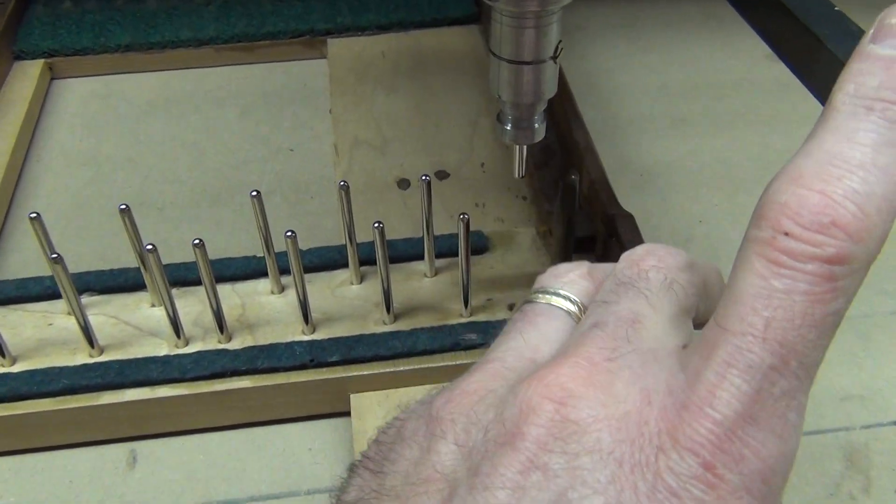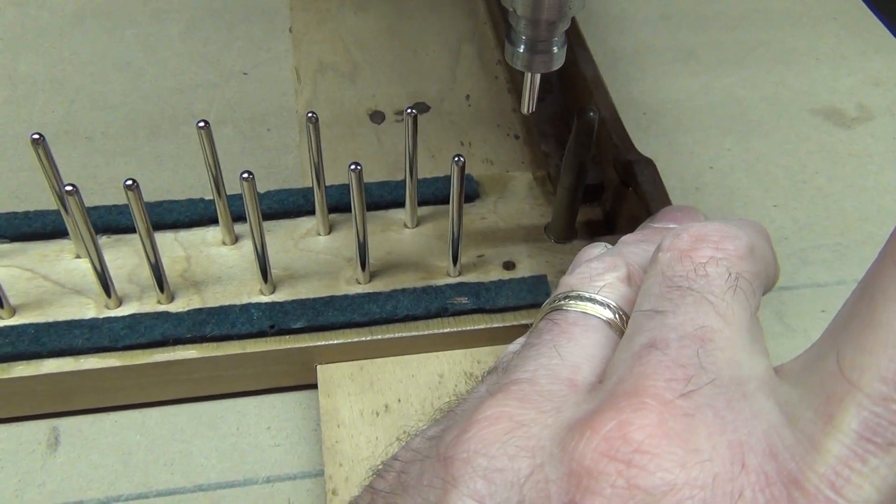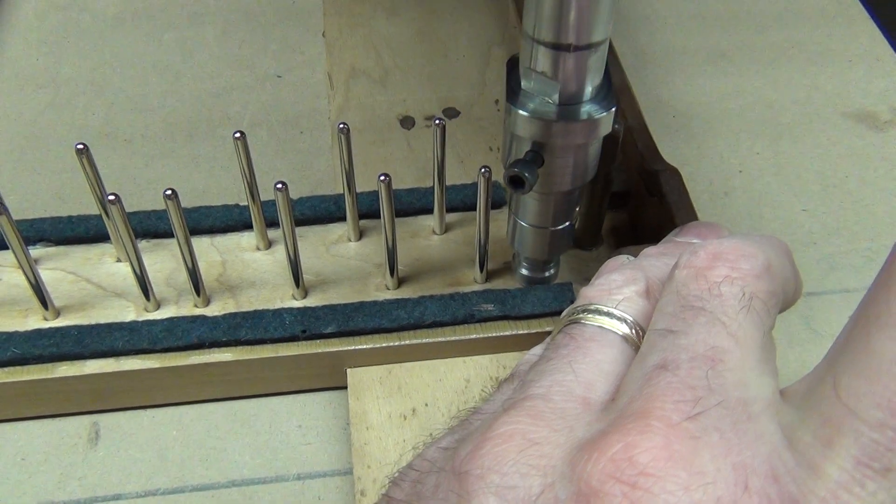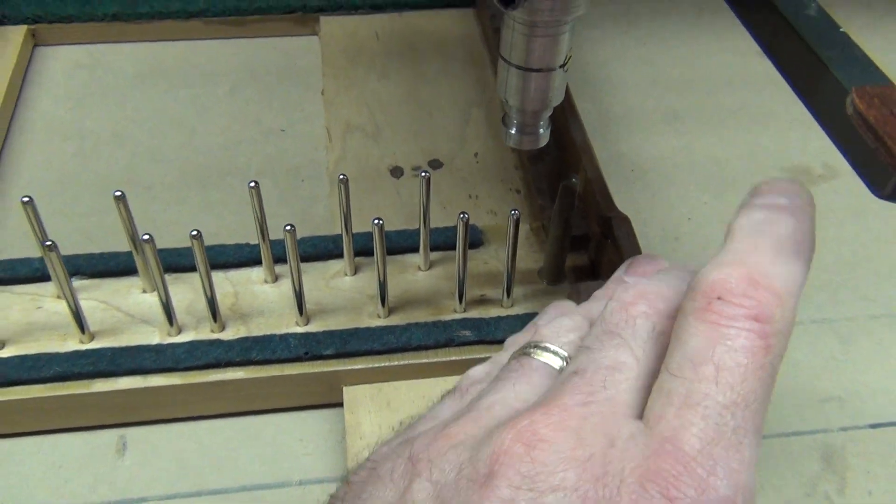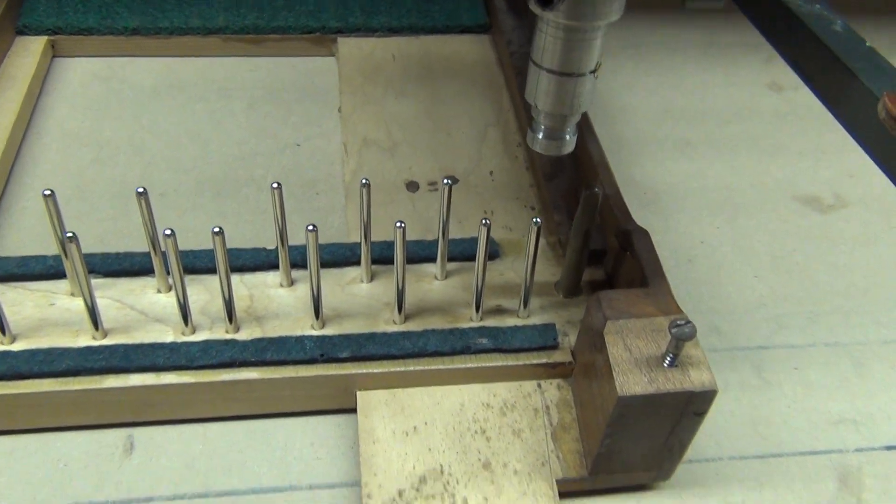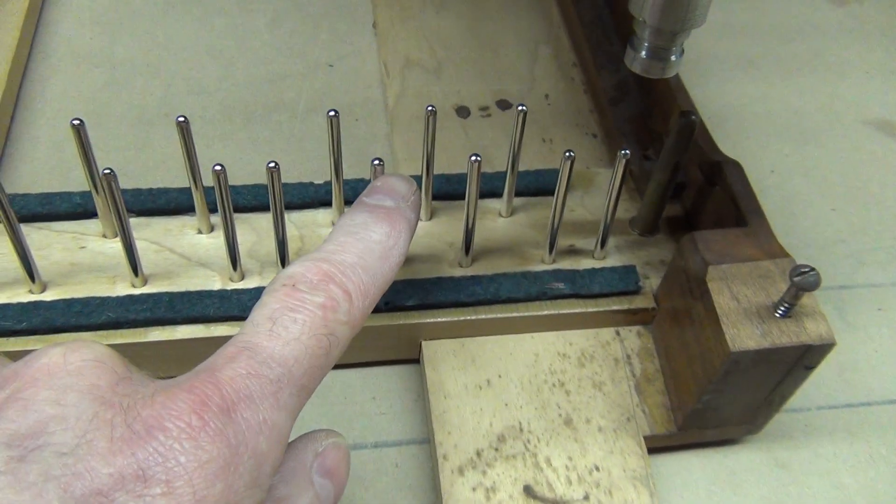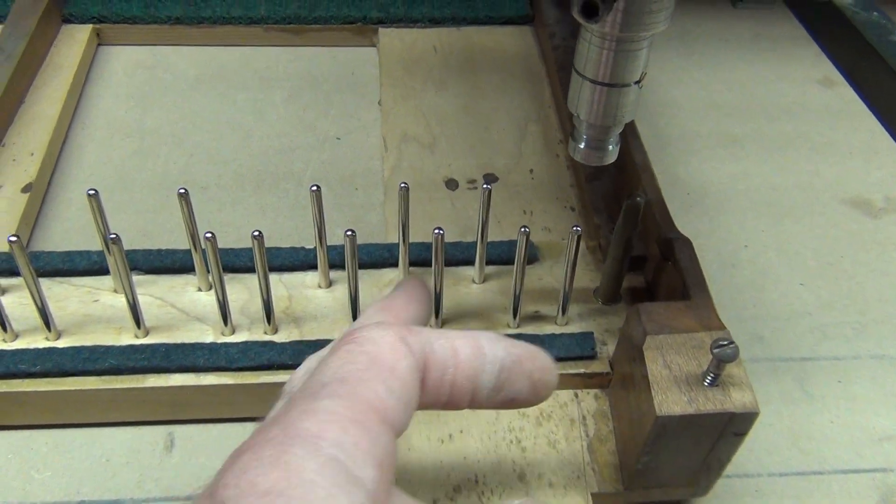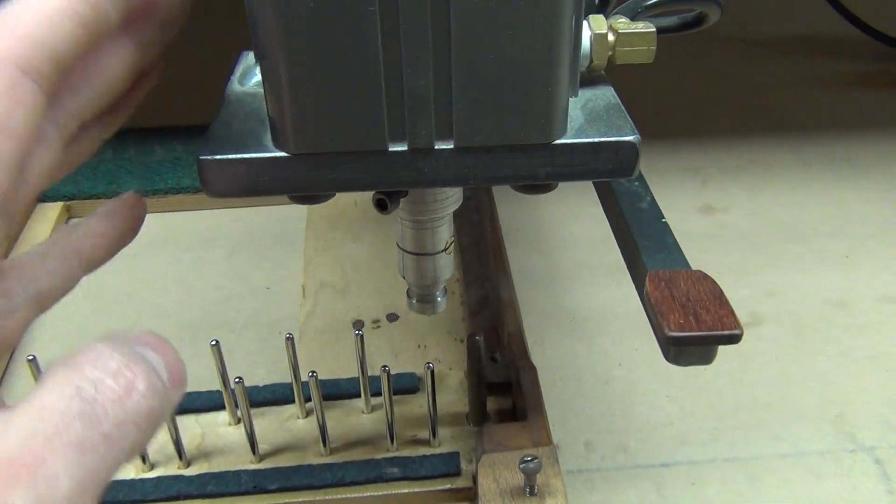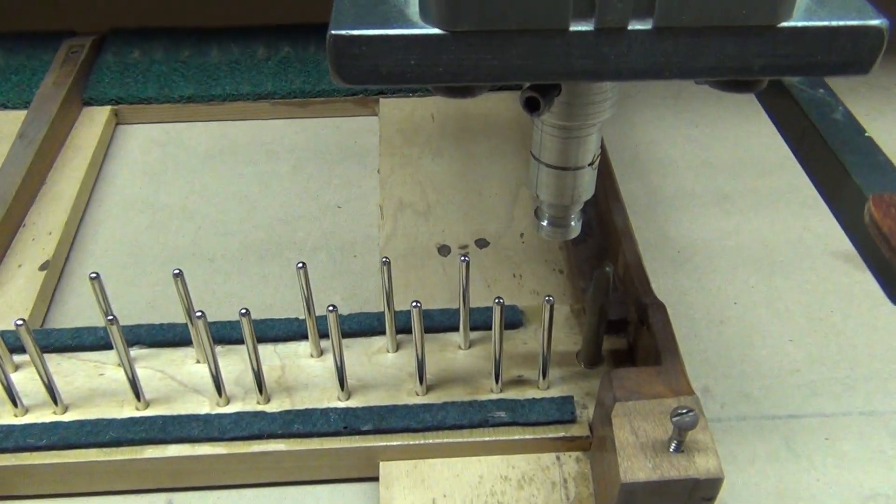As far as repinning, simply just press down the handle and it presses them in. So again, they're all the same height, same angle, and they're all perpendicular to the keyframe because this fixture was made very accurately.